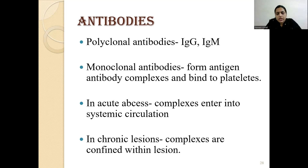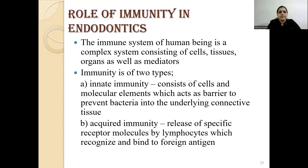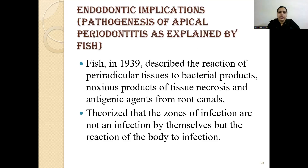Regarding antibodies: polyclonal antibodies include IgM and IgG, whereas monoclonal antibodies form antigen-antibody complexes and bind to platelets. In acute abscess, these complexes enter the systemic circulation; in chronic lesions, complexes are confined within the lesion. Regarding immunity in endodontics, there are two types: innate immunity and adaptive immunity. Innate immunity consists of cells and molecular elements that act as a barrier to prevent bacteria from entering the underlying connective tissue. Adaptive immunity involves the release of specific receptor molecules by lymphocytes that recognize and bind to foreign antigens.